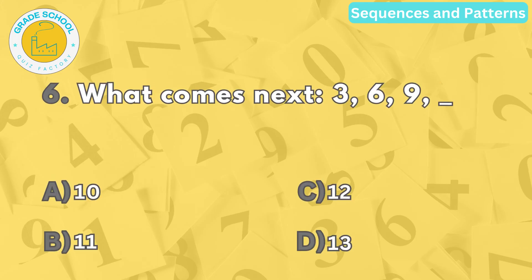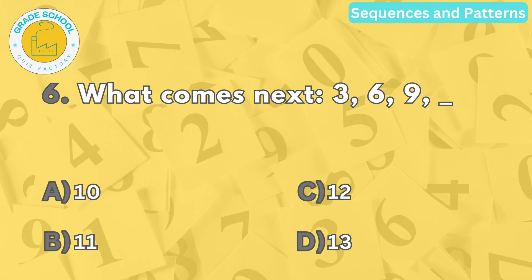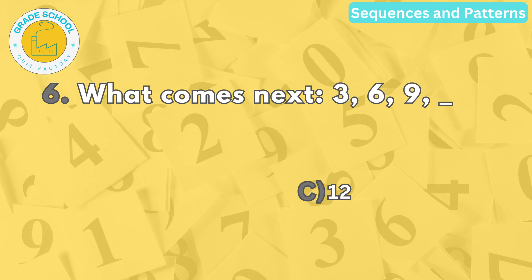Question number six. What comes next? Three, six, nine, blank. The correct answer is letter C. Twelve. The sequence adds three to each number in order.